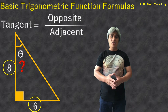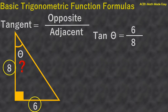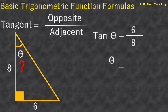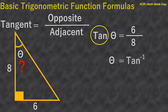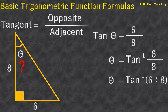Tangent theta equals 6 over 8. Next step is to know the inverse function of tangent so we can get the value of angle theta. Theta equals — what is the inverse of tangent? Yes, arc tangent. And this is its symbol. So theta equals arc tangent 6 over 8, which means theta equals arc tangent 6 divided by 8. So angle theta equals 36.87 degrees.